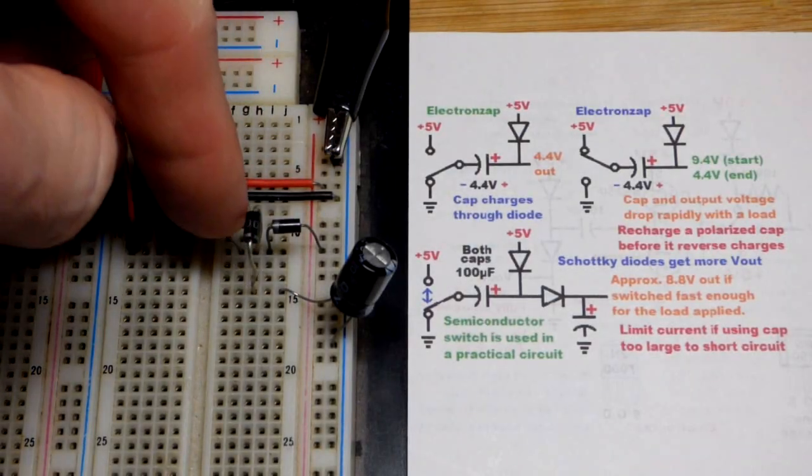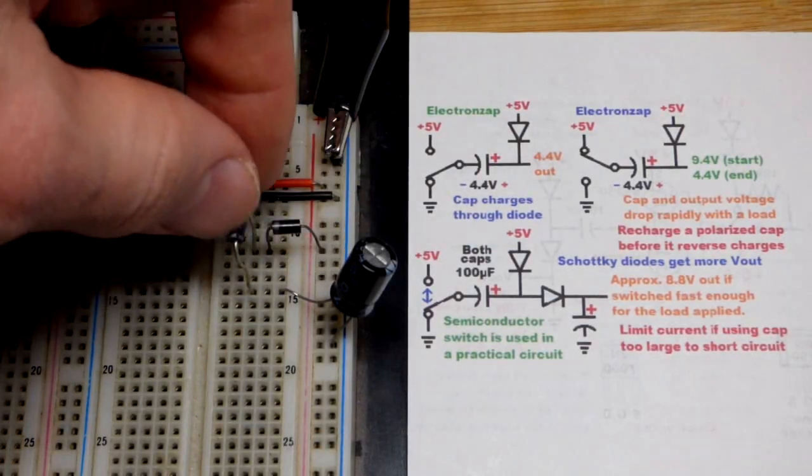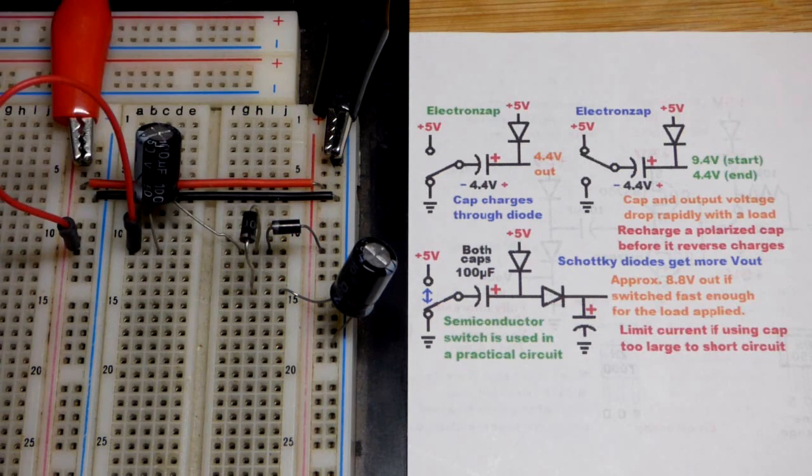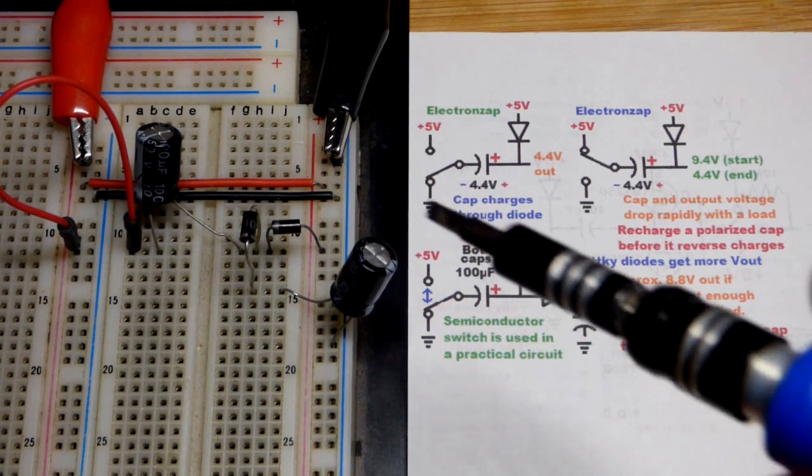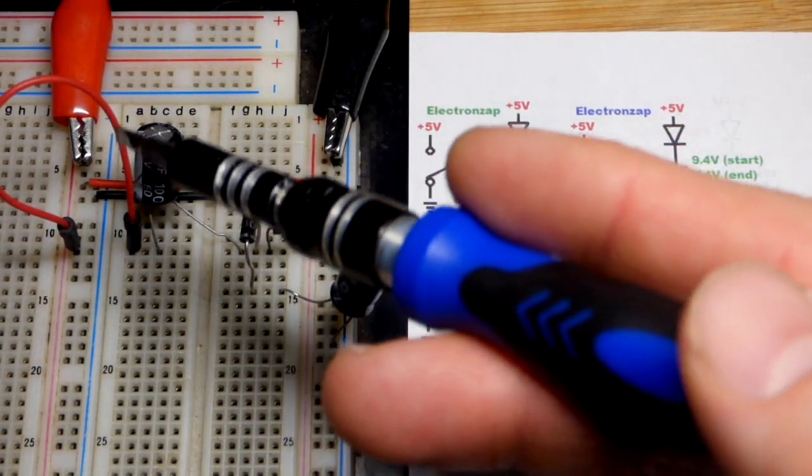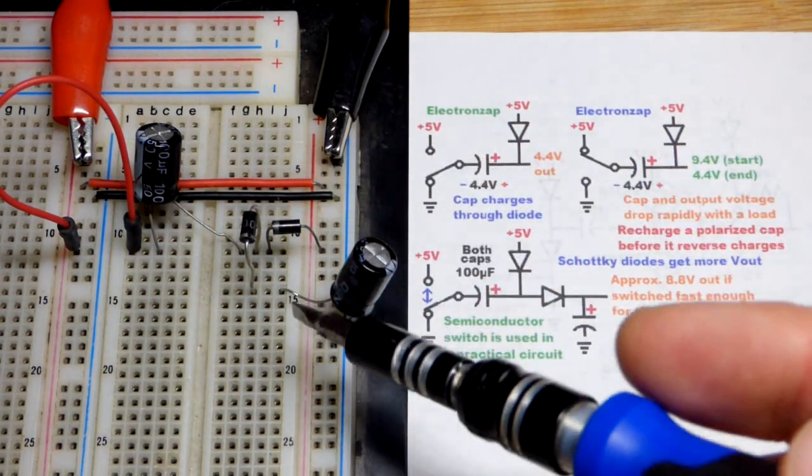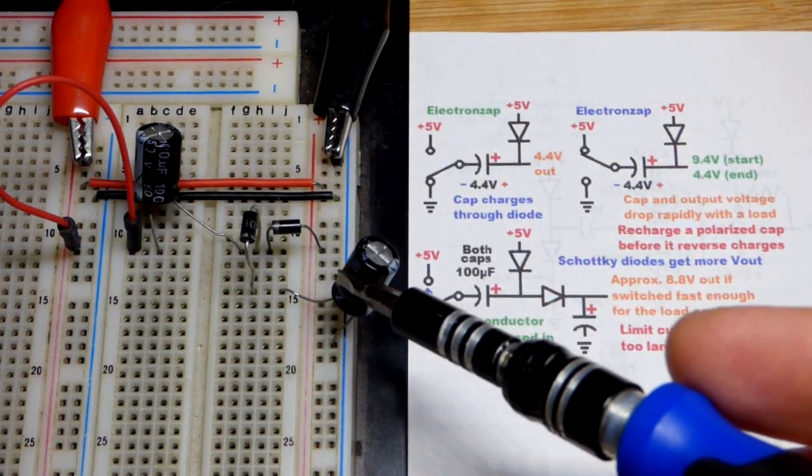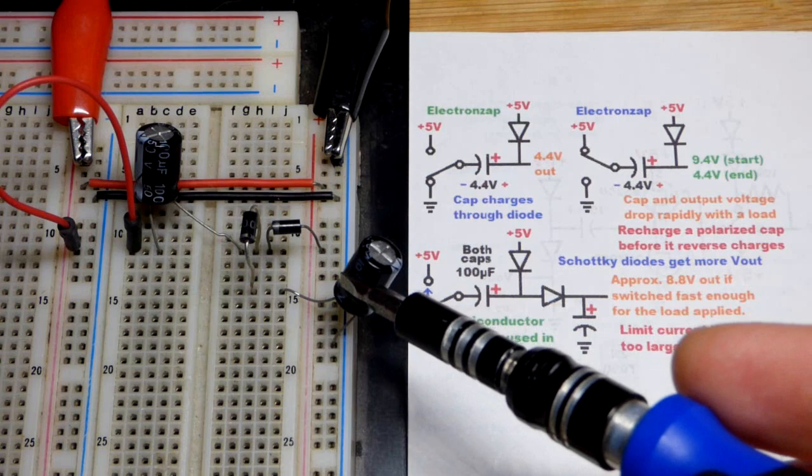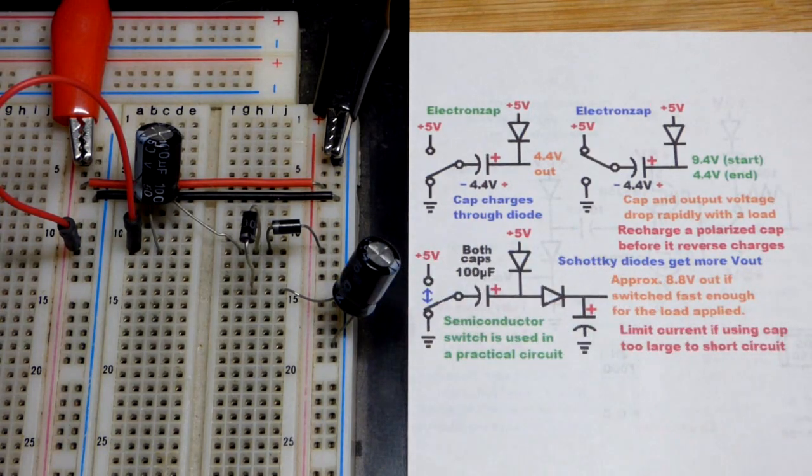In this video we're going to look at a voltage doubler circuit. It doesn't really quite double the voltage, we'll talk about why, but we're powering the circuit with five volts and ultimately we're going to be able to charge this capacitor up to almost 10 volts, over nine volts, because there are some losses.